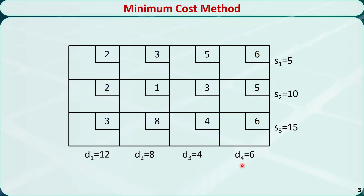Now in the first step, we need to find the cell with the minimum unit cost, which is this cell with the unit cost of 1. We need to allocate as much as possible to this cell and subtract the allocated amount from supply S2 and demand D2. The largest amount we can allocate is 8, because if we allocate more than 8, D2 will be changed to a negative number. We put number 8 here and subtract it from D2 and S2. D2 will be 0 and S2 will be 2. This is the new tableau.